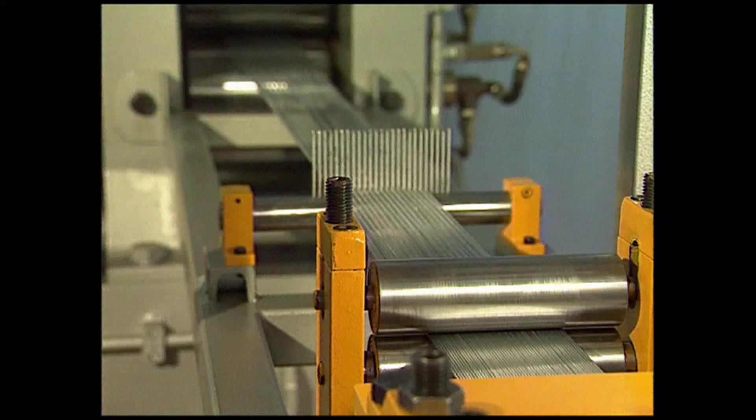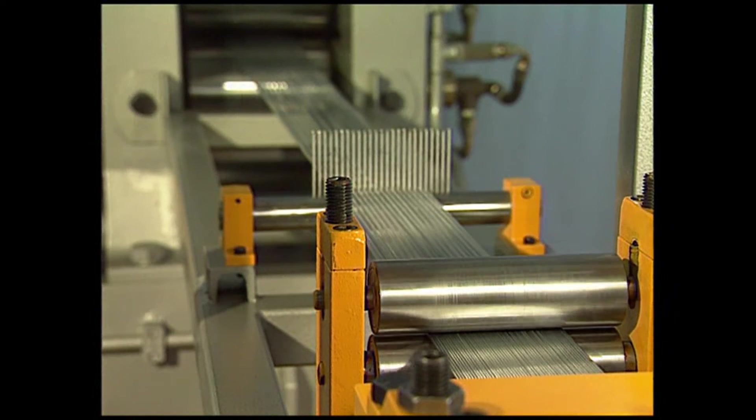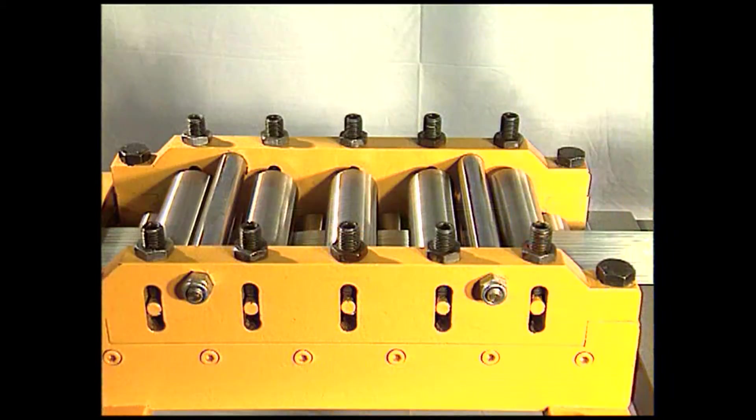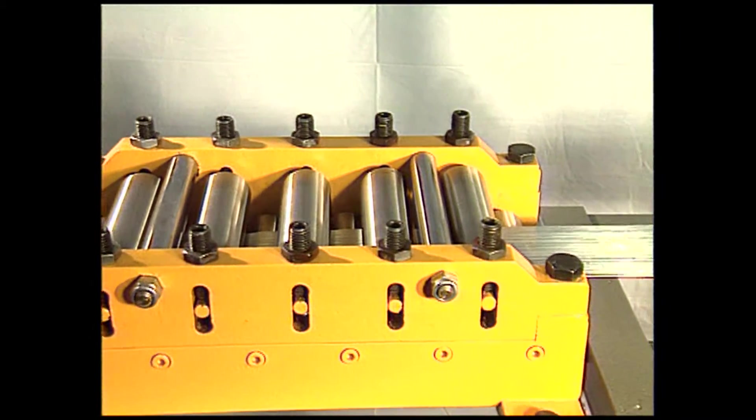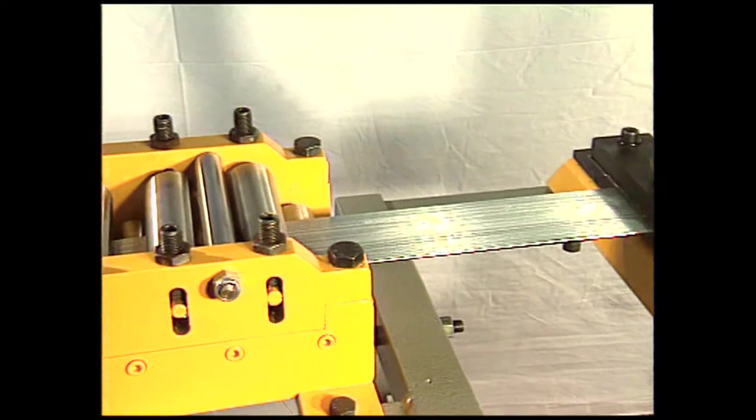The multiple wires are pushed together to the required width of the band. An auxiliary straightening system assures that the individual wires are absolutely parallel for the gluing operation.